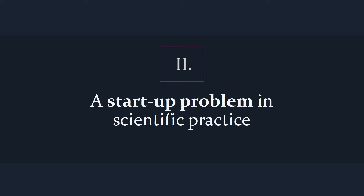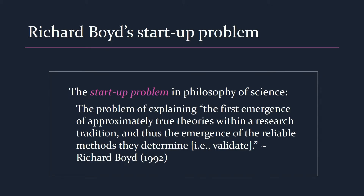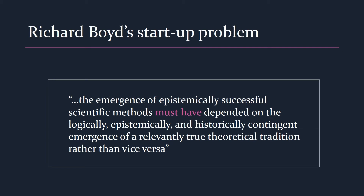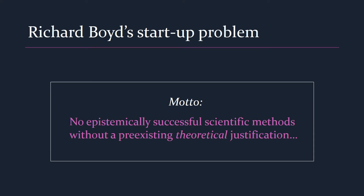My presentation addresses what might be called a startup problem in scientific practice. I owe the term to Richard Boyd, who speaks of the startup problem in philosophy of science as the problem of explaining the first emergence of approximately true theories within a research tradition, and thus the emergence of the reliable methods they determine. The startup problem is a problem, Boyd thinks, because scientific methods are deeply theory dependent. It is not an option to explain the emergence of successful scientific theories by appealing to the methods they make possible, nor by reference to a more basic theory-independent methodology, because no such methodology exists. The upshot is that methods must have depended on the historically contingent emergence of a relevantly true theoretical tradition. Or, to render this as a motto: no epistemically successful scientific methods without a pre-existing theoretical justification.